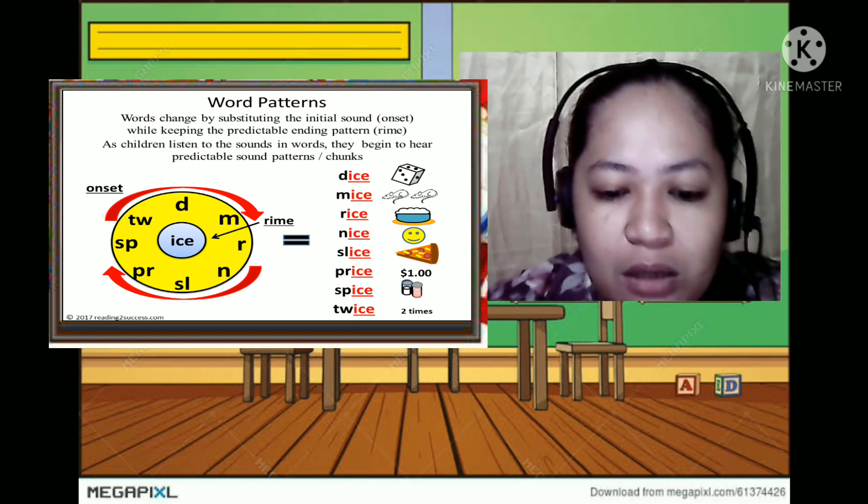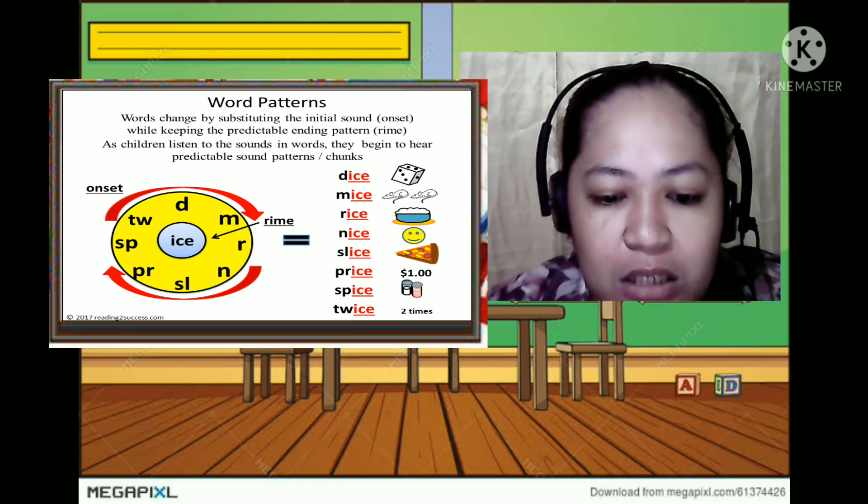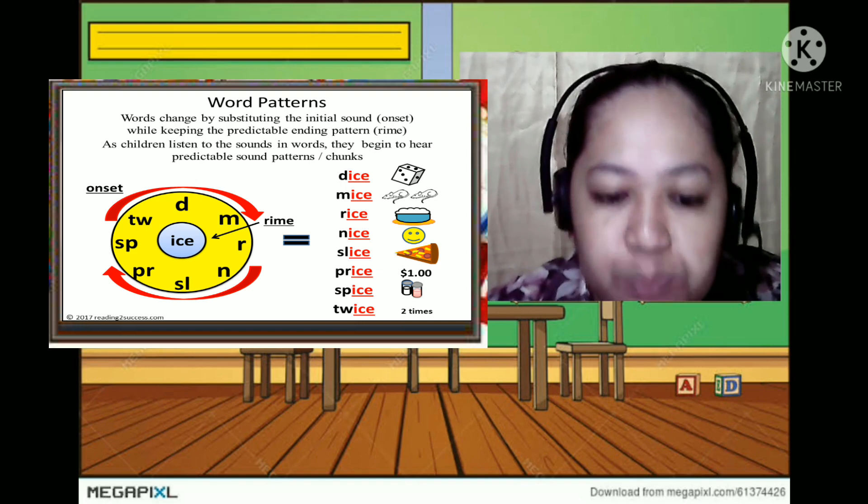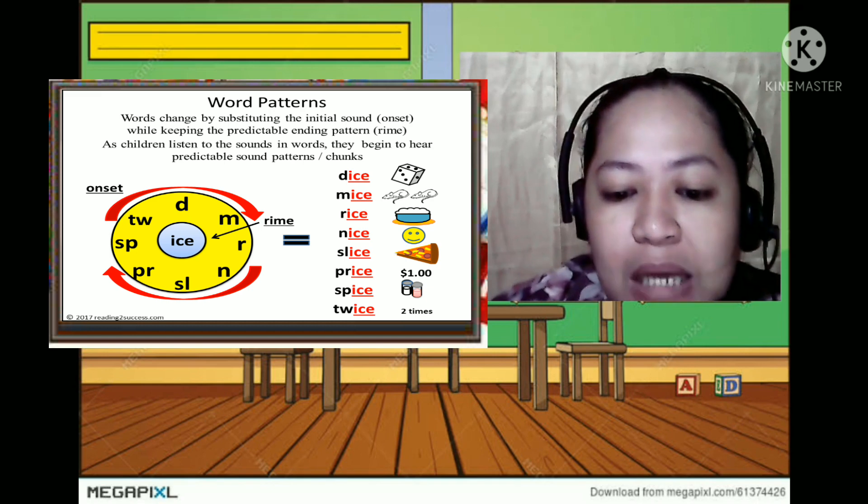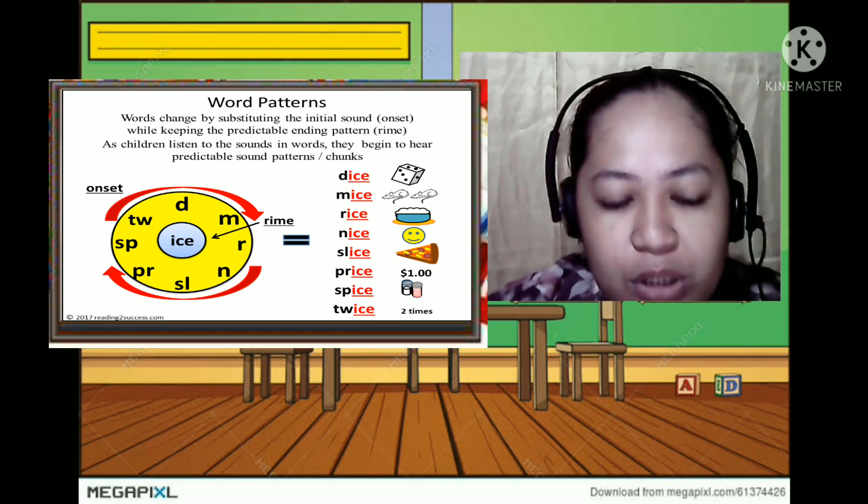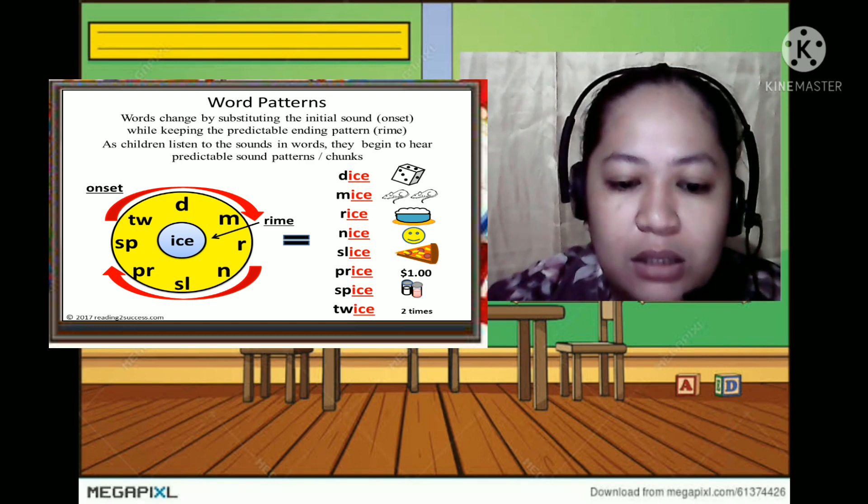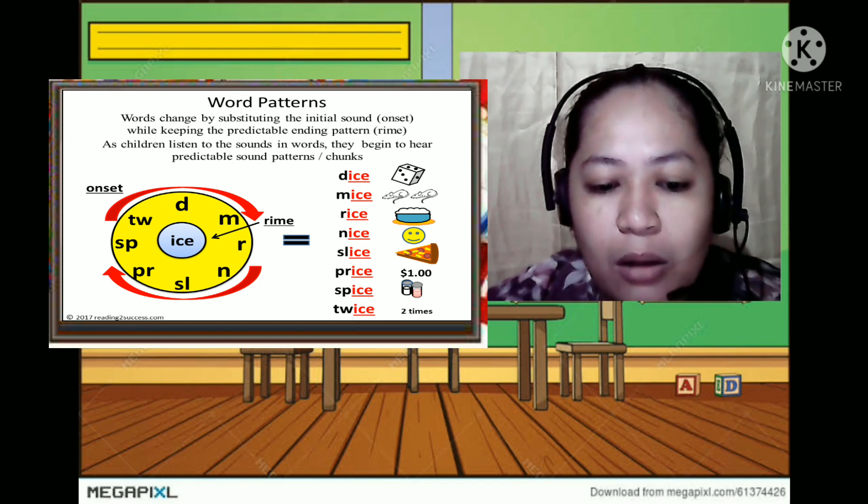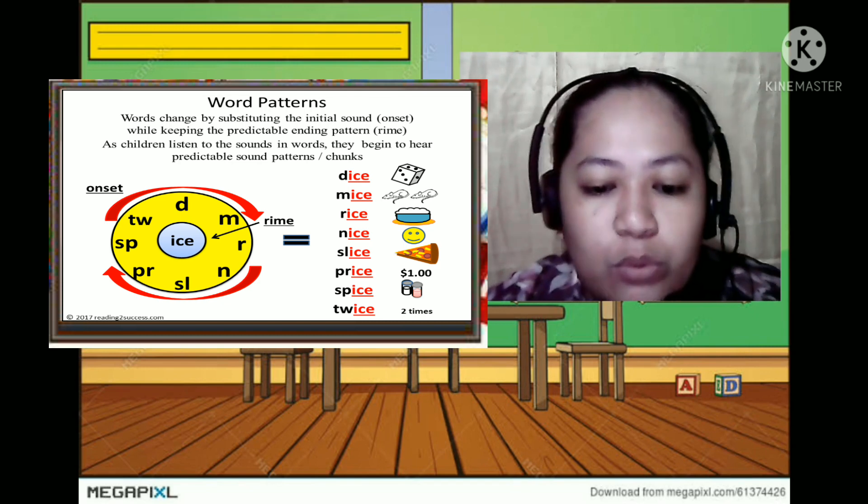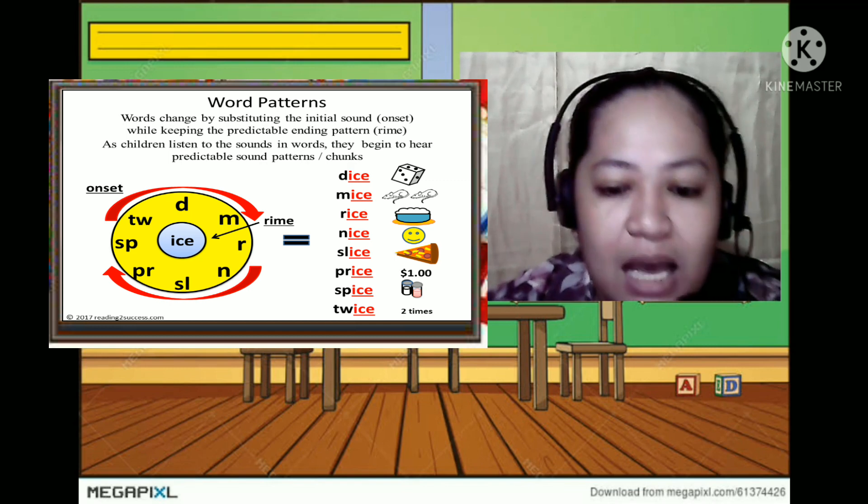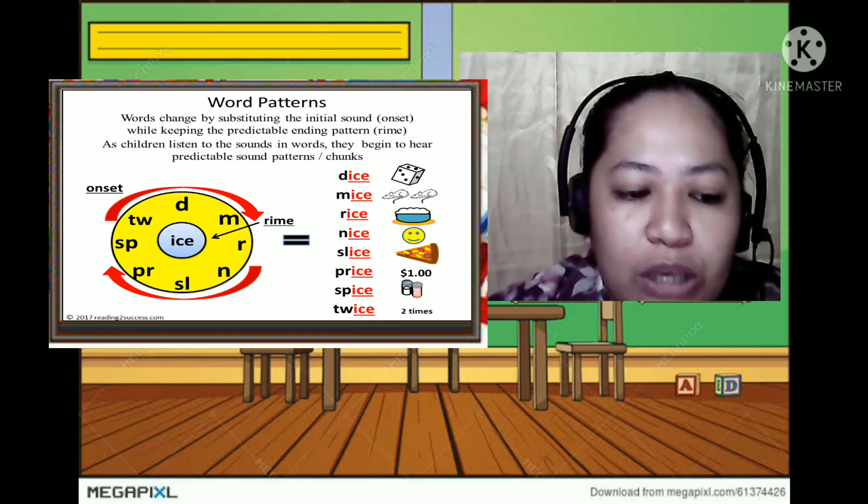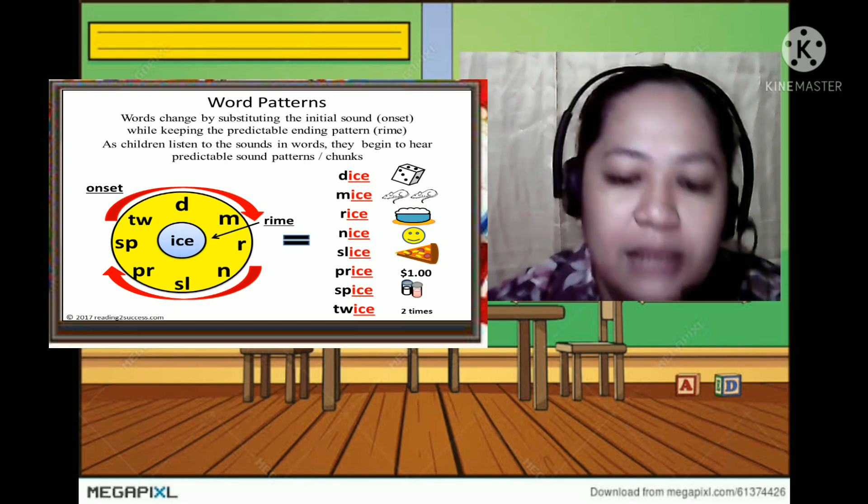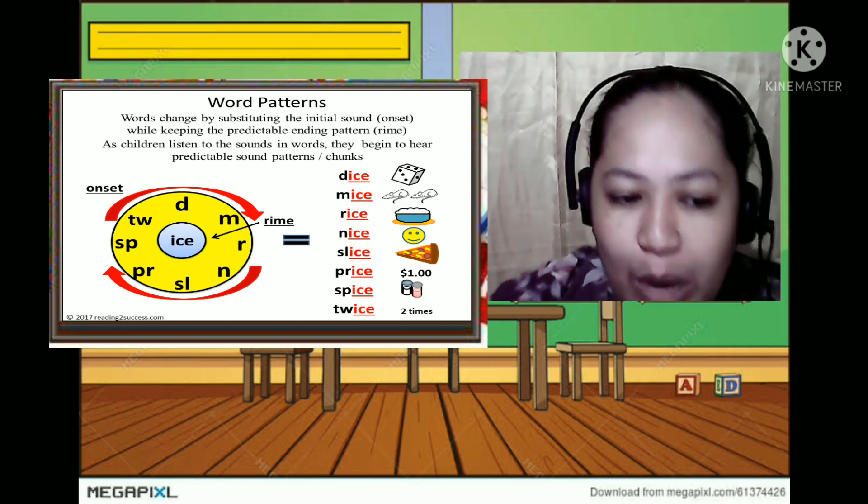So it would be the initial sound onset and then the additional pattern that will make the word being rhyme. So as children listen to the sound in words, they begin to hear predictable sound patterns or chunks. Like for example in this picture: the D, T, W, S, P, P, R, S, L, N, R, M are actually the onset letters. And then we will be adding the I-C-E as the rhyme. So if you will add it to those letters it would become dice, mice, rice, nice, lies, price, spice, and twice. So they have the rhyme of I-C-E.